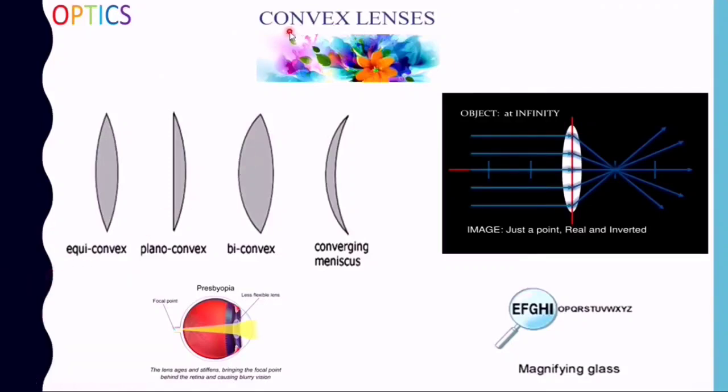Convex lenses, or converging lenses, are of four types: equiconvex, planoconvex, biconvex, and converging meniscus.